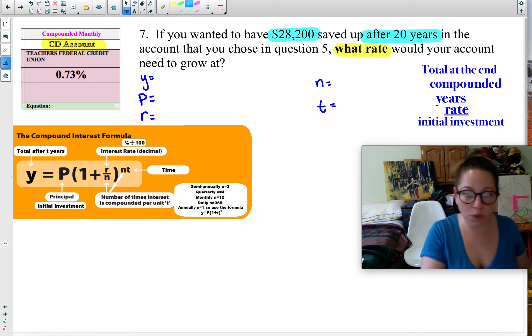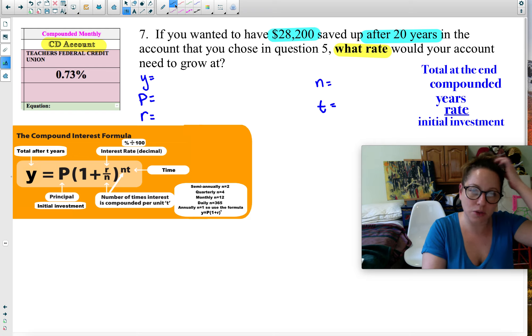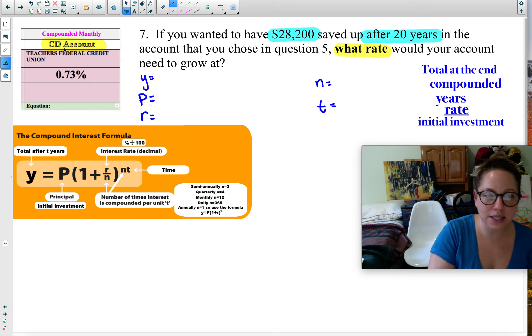I'm starting with the same $15,000 that I've been starting with in all these problems, but I want it to grow to $28,200. That's a lot of money in 20 years. Because the CD account is compounded monthly, I know I'm using the compound formula. Let's go through each letter here and identify what each one is.